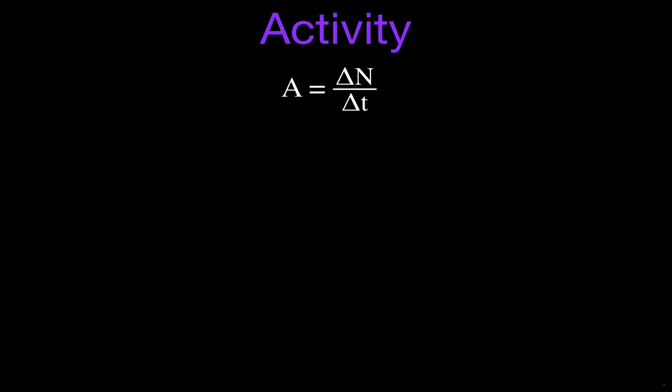When we want to calculate the activity, there are three basic equations. The first is essentially the definition of activity: it's equal to the number of decays that occur per second. So if you register 10 decays over a period of two seconds, 10 divided by 2 is 5, giving you an activity of 5 Becquerels.